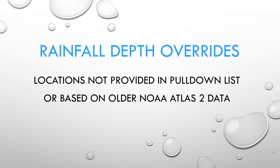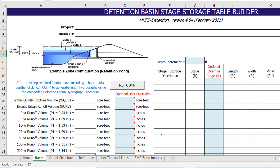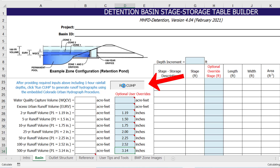Next, we will demonstrate how to override the default rainfall depths to be consistent with the values used in the CUHP SWMM models. Other reasons to override rainfall depths may include that the location is outside of the district and not provided in the pull-down list, or that local criteria requires use of values from the older NOAA Atlas 2 instead of the more current NOAA Atlas 14. First, we will select user input from the pull-down list, then enter the rainfall depths in the blue override cells so that they are consistent with the values used for the multiple subcatchments in CUHP. Now that we have provided all the required inputs, we can click the Run CUHP button. Keep in mind that this step is required to progress through the detention workbook and generate approximate detention volumes, but we will be overriding the CUHP runoff results with the SWMM routed results later in this example.